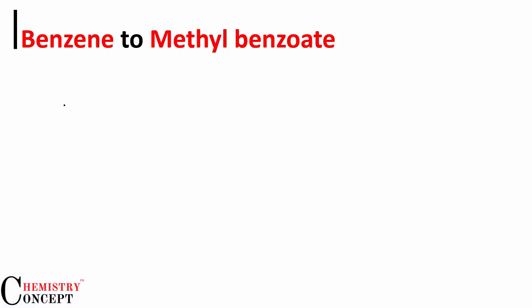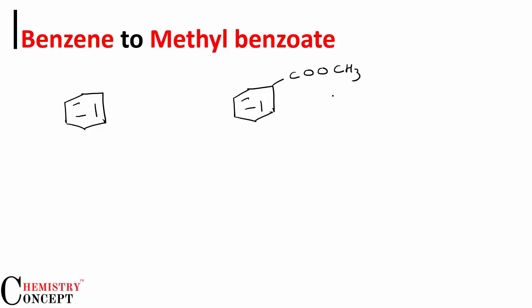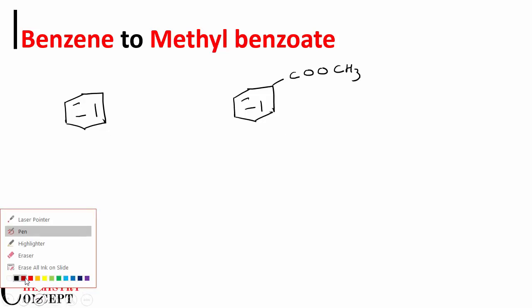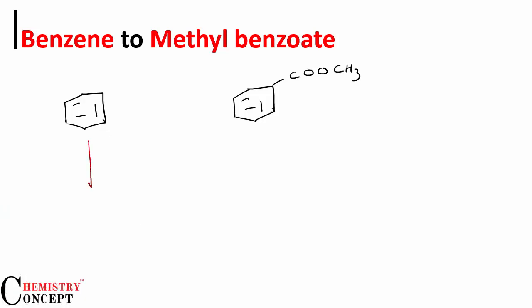We are converting benzene to methyl benzoate — methyl benzoate is actually an ester with the structure benzene-COOCH₃. We start this with Friedel-Crafts alkylation, reacting benzene with chloromethane in the presence of anhydrous AlCl₃.